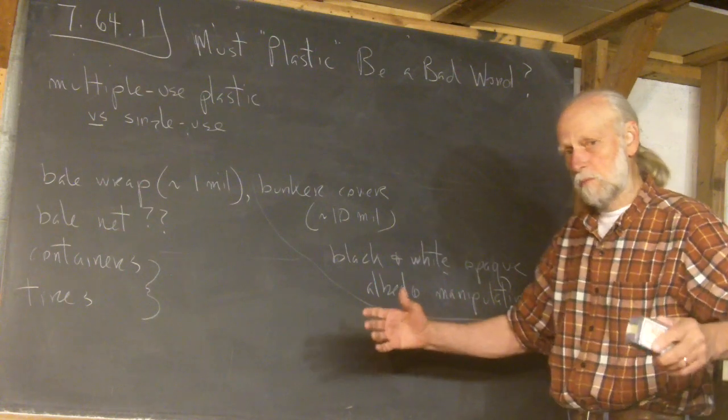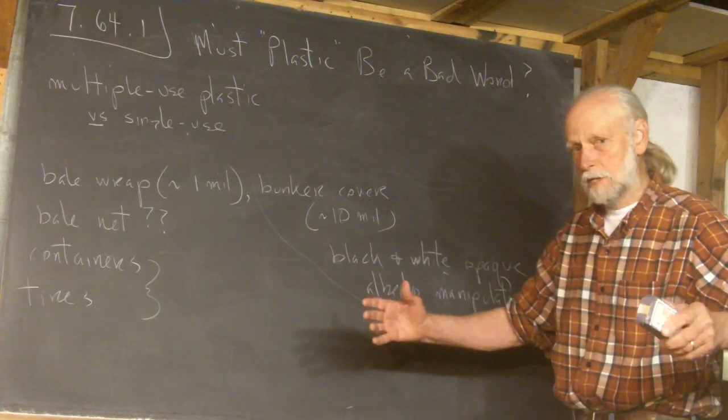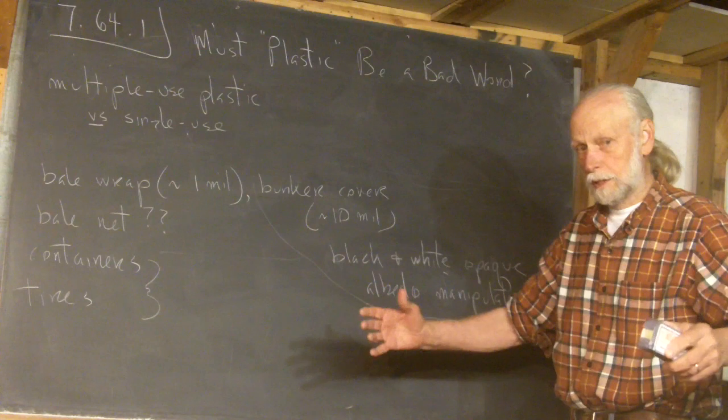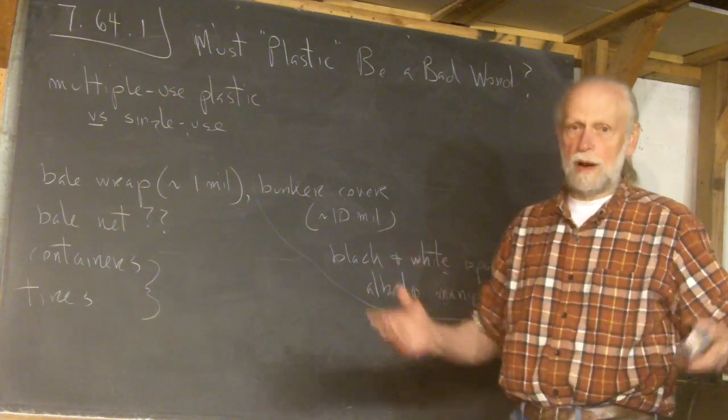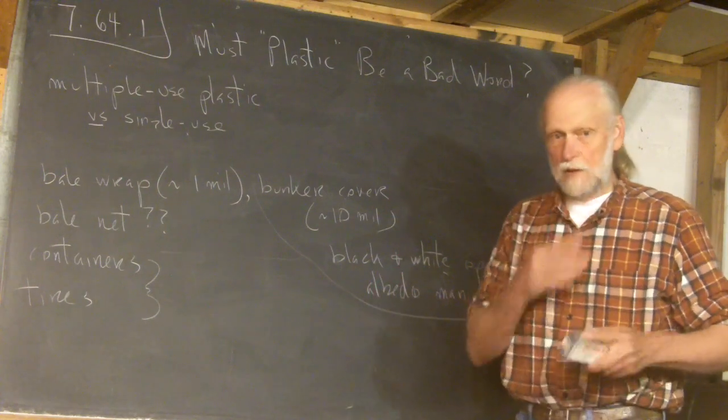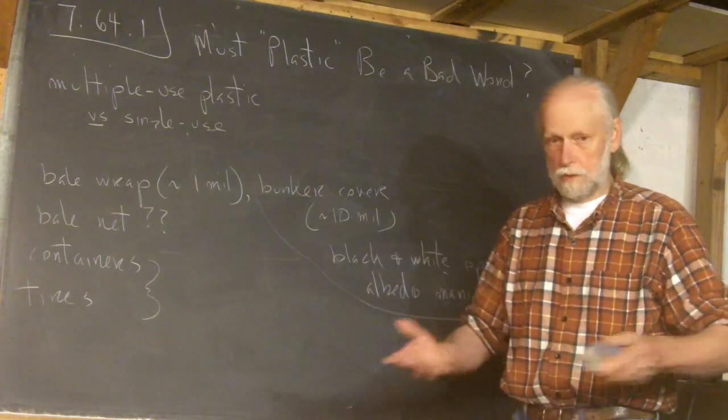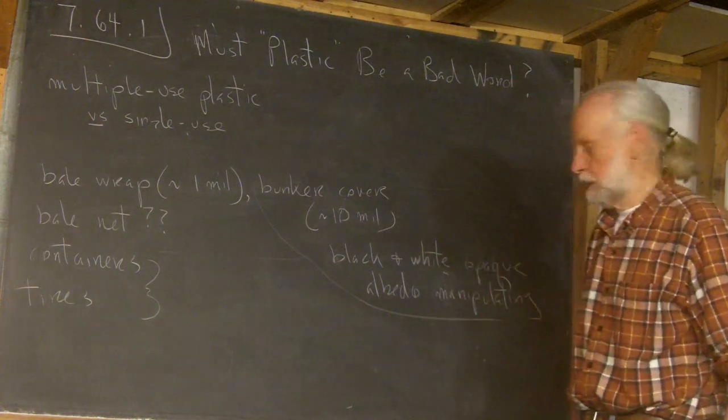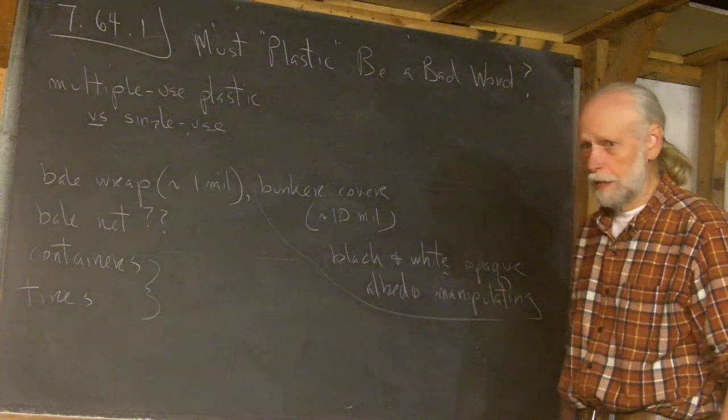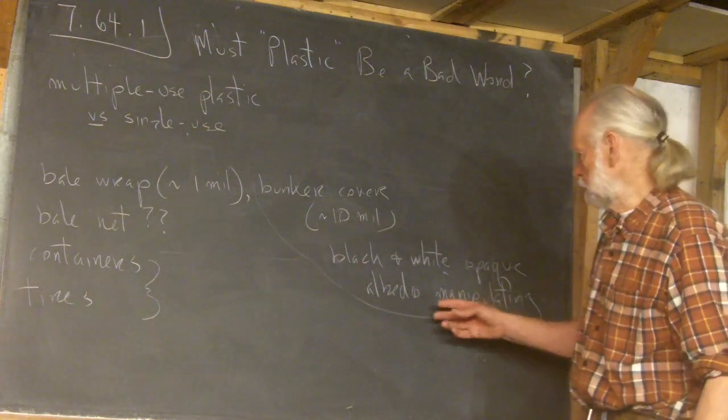Because even though it might be a small patch you're talking about, you actually can manipulate that. Like the Arctic ice sheet is one of the huge problems about that is it's white. And as it's melting off, the surface is not white anymore. And so that surface absorbs heat. And you've got that positive feedback loop going on.